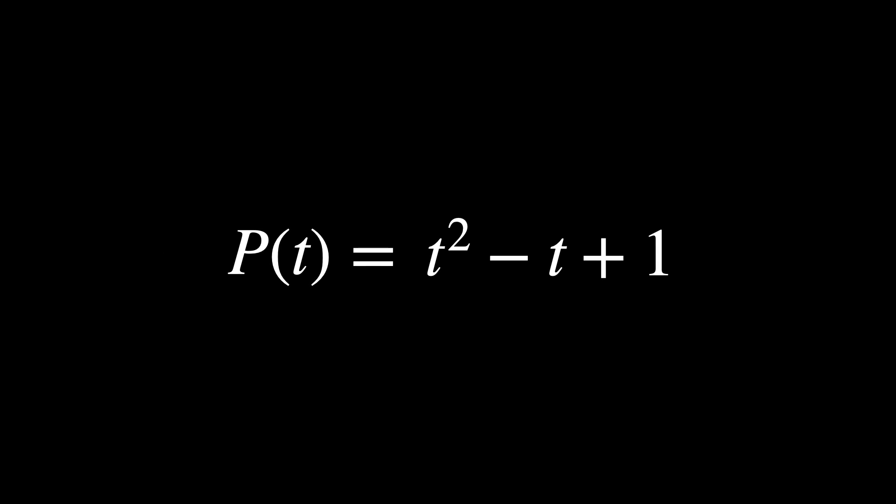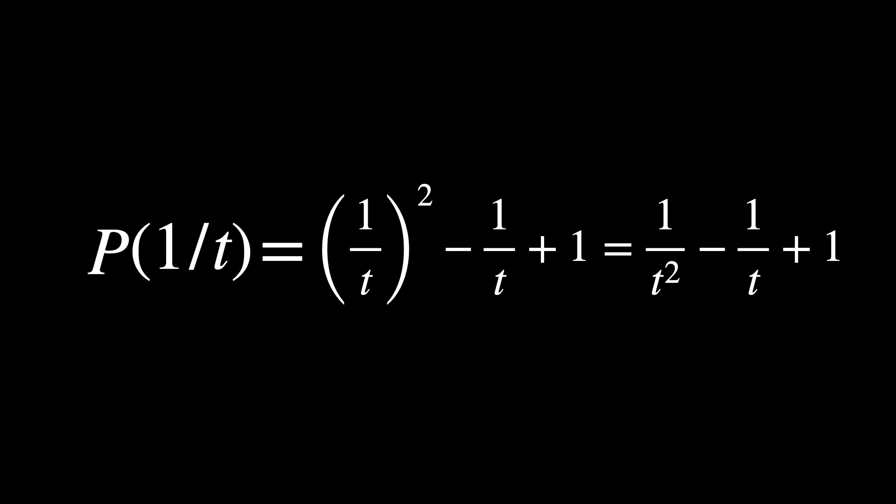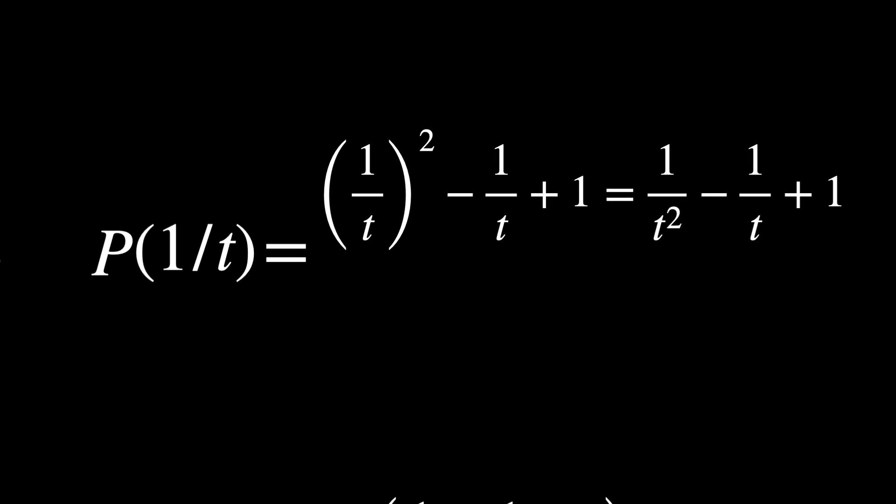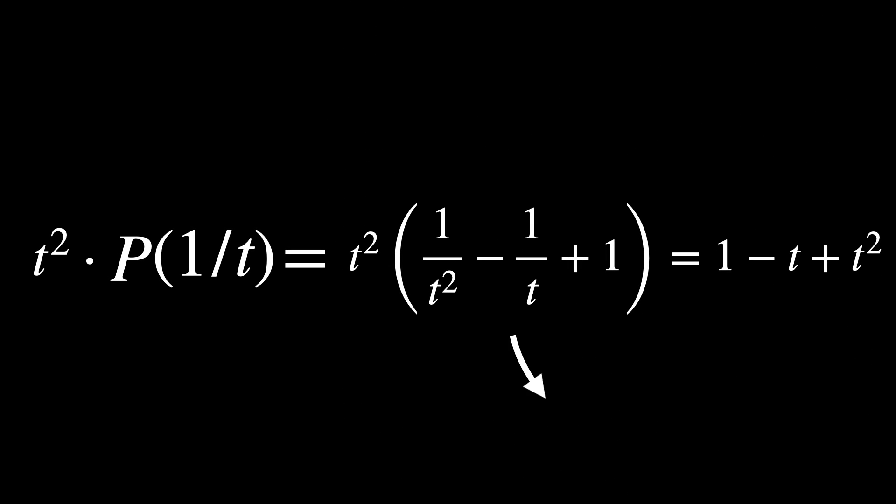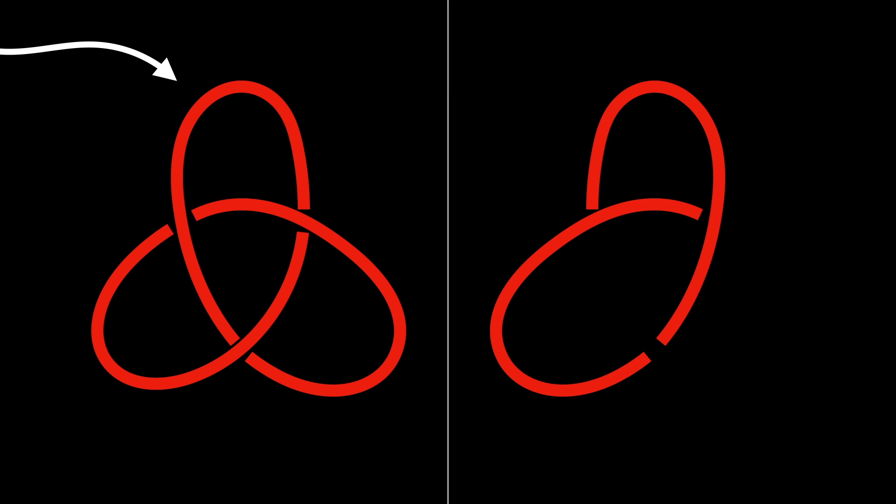The polynomial, t squared minus t plus 1, is symmetric when you substitute t with 1 over t, and then multiply by t squared, the highest power of t in the polynomial, indicating that the trefoil knot is chiral and has a particular kind of symmetry. So, they are used to study and understand the deep properties of knots, beyond just their visual representations.